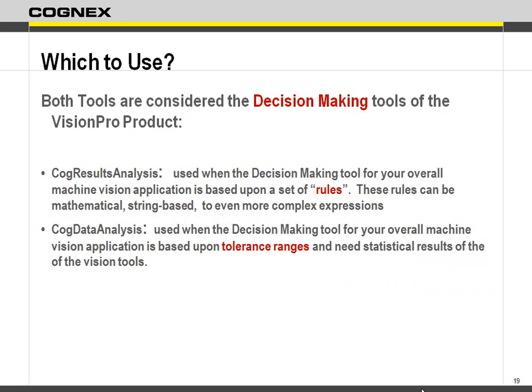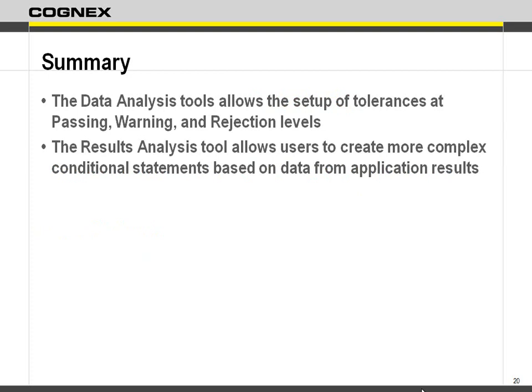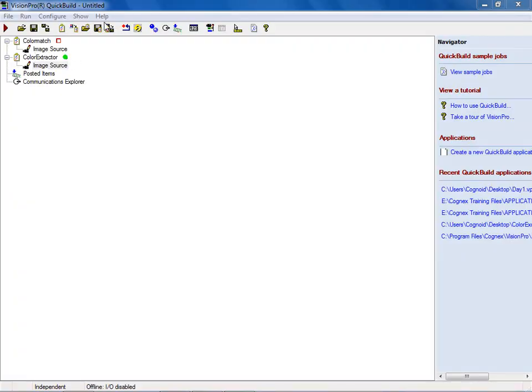Both are decision-making tools. The data analysis tool is just tolerance ranges — a numerical value going in that you're checking tolerance against; that's all it is. The results analysis tool, even though it can do tolerance ranges, can do so much more: logic, string comparisons, a set of rules checking whether you pass. It's that one step beyond a basic data analysis tool. Data analysis looks at tolerances and sets pass, warn, or reject; results analysis looks at a set of rules to give you back your result.